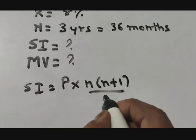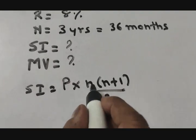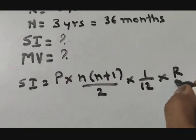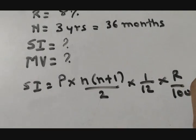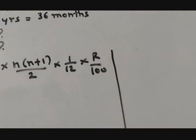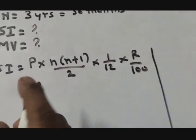And which formula we will use? First of all, simple interest equals—don't forget to mention in your answer booklet the formulas because sometimes they give marks for the formulas—so here, P multiply by n(n+1)/2 multiply by 1/12 multiply by R/100. I'm just making a partition here so that if any calculation is there, then we can do the calculation.